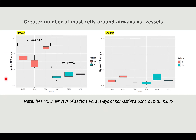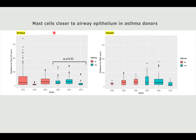This graph shows the distance between mast cells and either pan-cytokeratin in the airways or smooth muscle actin in the vessels. The one significant difference we found is that mast cells are closer to the airway epithelium in asthma donors — they sit closer to the airway itself. That makes sense given that they looked more clustered in the photo, and the p-value is 0.03, so that's a significant difference.